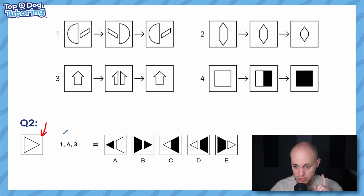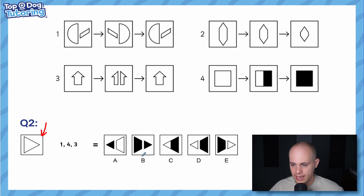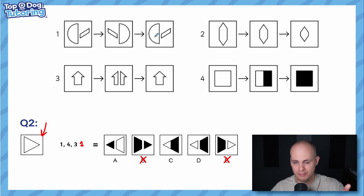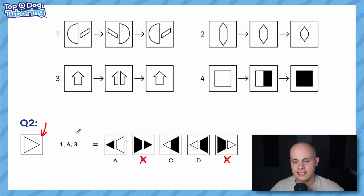Operation one gives a mirror image, so the shape is now pointing left — I can eliminate B and E straight away. I'm confident because scanning ahead, number one doesn't come up again. If it did appear again later, I'd be more cautious since it would flip back. Always scan ahead in your sequence to see if a number appears twice.